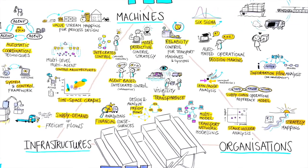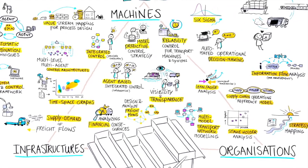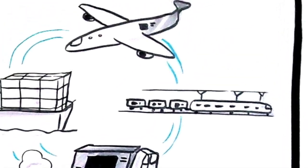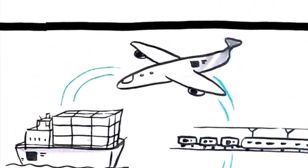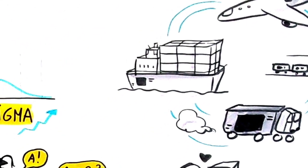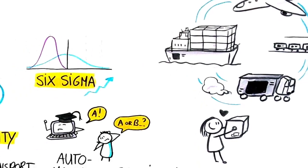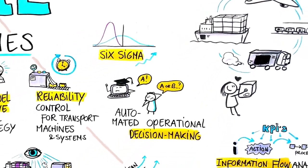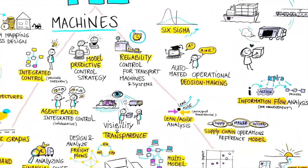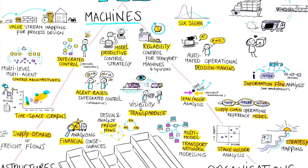Together these determine the intricate dynamics of road, rail, air and water transport systems. To solve today's transport challenges, you need to understand each of these three perspectives.